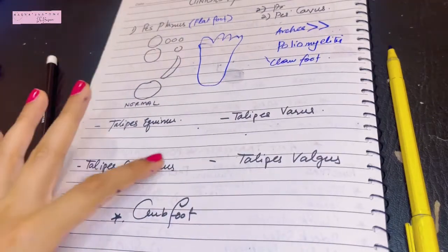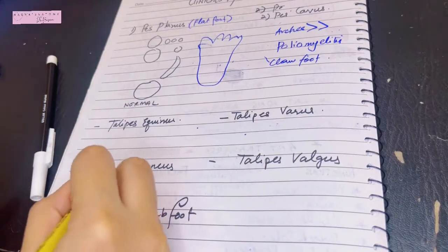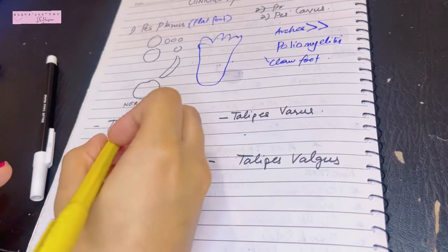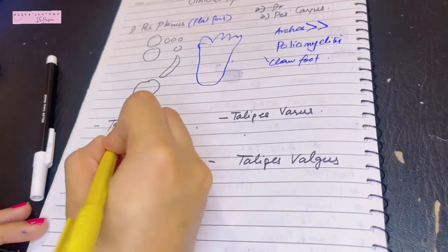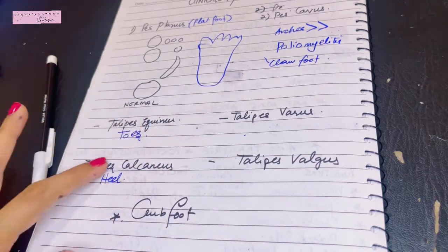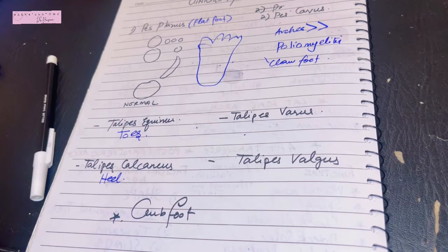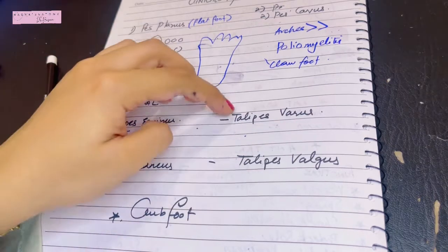Talipes equinus is the opposite. The person comes walking on his toes or he is walking in plantar flexion. This is walking in dorsiflexion. So these are deformities that can occur congenitally or acquired.